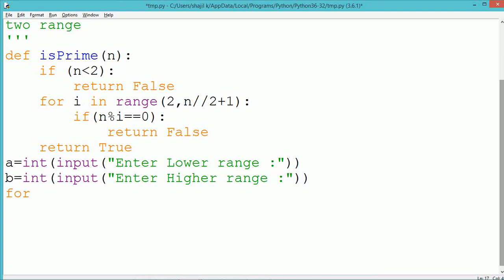At the beginning, we check that the value of n is less than 2. That means negative or 0 or 1. Then we return the value false to indicate that they are not prime numbers.